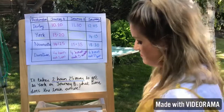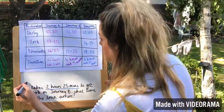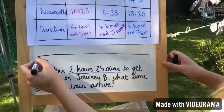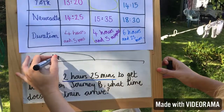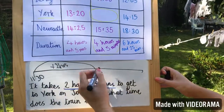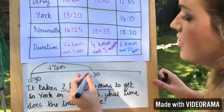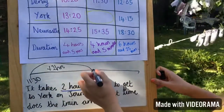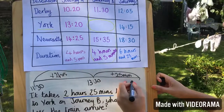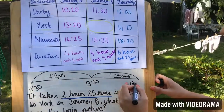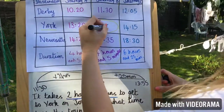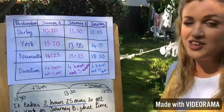So I'm going to draw a timeline. It leaves Derby at 11:30. I'm going to add on two hours first — that takes me to 1:30 in the afternoon, which in 24-hour time is 13:30. And then I've got to add 25 minutes, which takes me to 13:55.